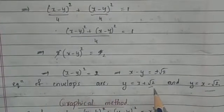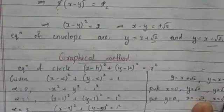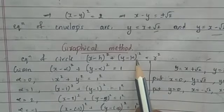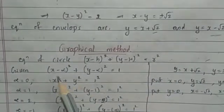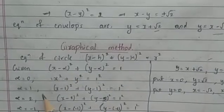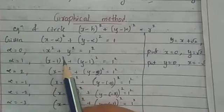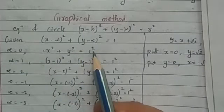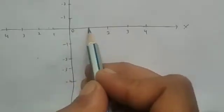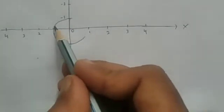Let's discuss graphically how these envelopes touch every member of the family. The general circle equation is (x−h)² + (y−k)² = r². For α = 0, we get x² + y² = 1: center (0, 0), radius 1. For α = 1, we get (x−1)² + (y−1)² = 1: center (1, 1), radius 1.